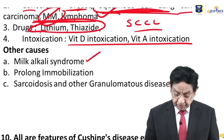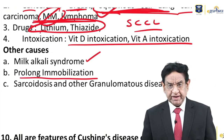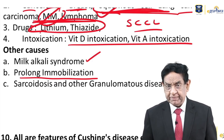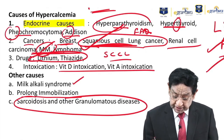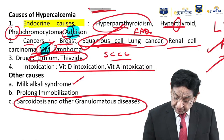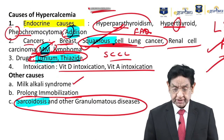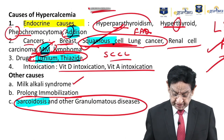Rank number one causes of hypercalcemia to remember: squamous cell lung cancer, thiazide, lithium, and sarcoidosis. Don't forget sarcoidosis specifically.